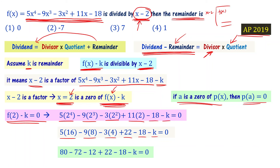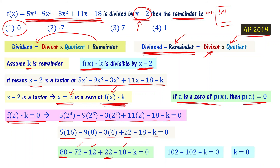Further simplifying: 80 minus 72 minus 12 plus 22 minus 18 minus k equals 0. Adding all terms: 80 plus 22 equals 102, and 72 plus 12 plus 18 equals 102. So 102 minus 102 minus k equals 0, which means k equals 0. So the remainder is 0, meaning x minus 2 divides f of x perfectly. Choice 1 is the answer.